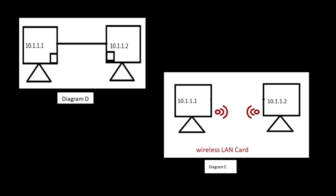It is not mandatory to connect machines with the help of cables only. Nowadays we get wireless LAN cards in our computers. As you can see in diagram E, both the computers are connected with the help of frequencies. This is an example of a wireless LAN card.